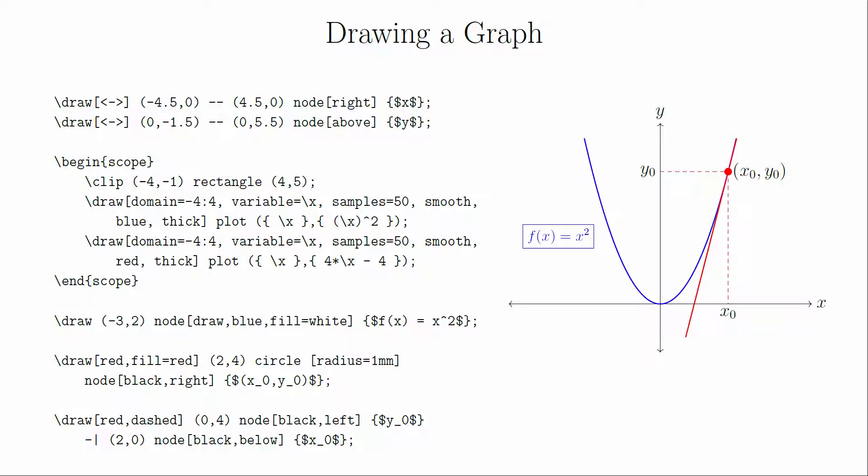What's nice about this is that if we relabel things a little bit and get rid of the grid, we have a generic parabola with a tangent line. Once you get used to the syntax, this becomes a fairly easy process.